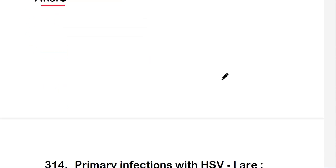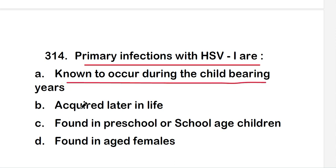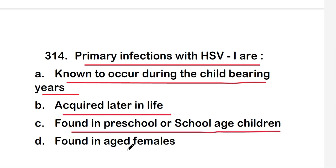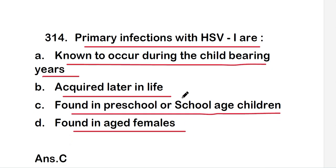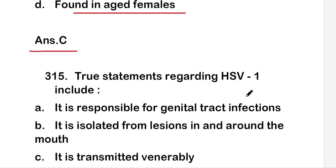The next question is: primary infection with HSV-1 is known to — occur during the childbearing years, be acquired later in life, be found in preschool or school-age children, or be found in aged females? The right answer is option C — primary infection with HSV-1 is found in preschool or school-age children.